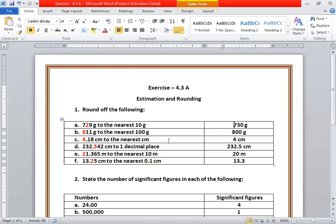Then 4.18 cm to the nearest cm. The cm place is 4. We have to change it to the whole number because 0.18 is less than 0.50, so we can neglect it. We will get 4 cm.